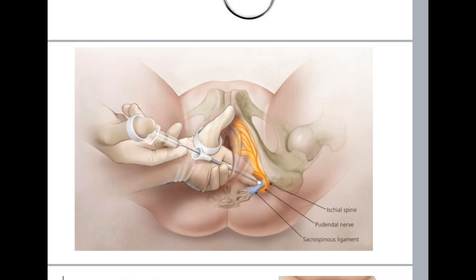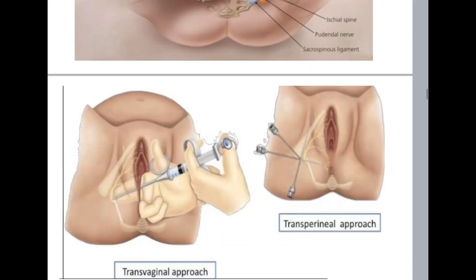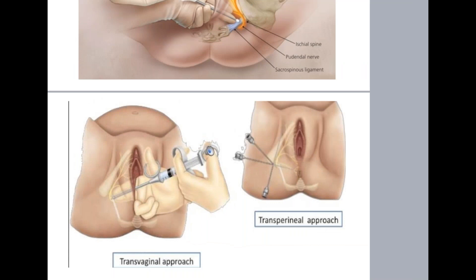For the transperineal approach, palpate the ischial tuberosity and inject through the skin medial to it. It may be necessary to place fingers inside the vagina while injecting to avoid injuring the baby, because the needle is very long and if the direction is missed, it could go inside the vagina. Palpating from inside with two fingers ensures the needle does not touch the baby.